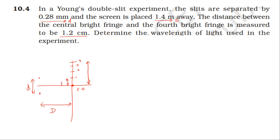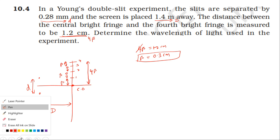The distance between consecutive bright fringes is beta. For the fourth fringe, the distance of four beta is 1.2 centimeter. So four beta equals 1.2 centimeter. Therefore, beta equals 1.2 divided by four, which is 0.3 centimeter or point three centimeter.